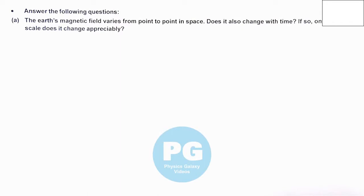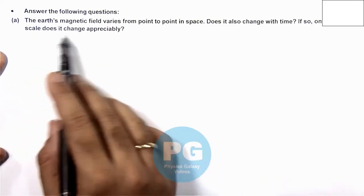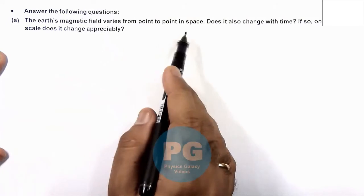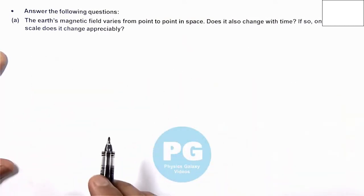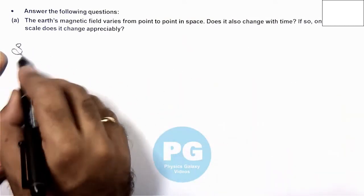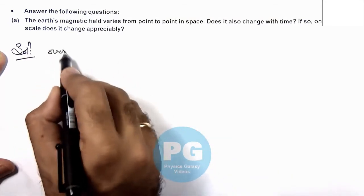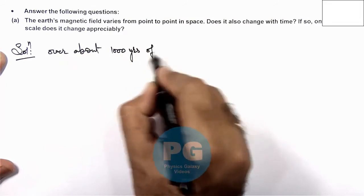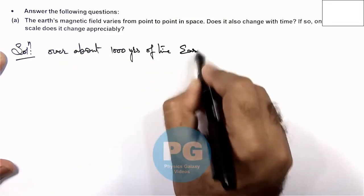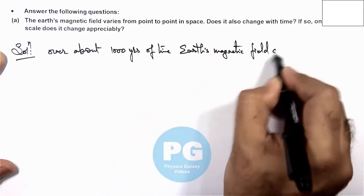In this exercise we have to answer some theoretical questions based on some interesting facts related to Earth's magnetism. Let's take up these six parts one by one. In part A, we are required to analyze: Earth's magnetic field varies from point to point in space — does it also change with time? If so, on what time scale does it change appreciably? Here we can write that over about a thousand years of time, Earth's magnetic field changes.